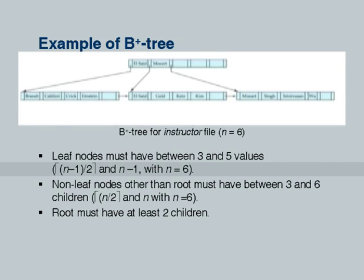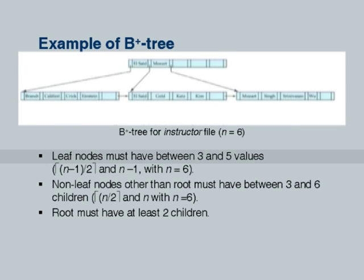Here is an example with n equal to 6. With n equal to 6, each leaf node must have between 3 and 5 values, and every internal node must have between 3 and 6 children - ceiling(6/2) is 3. Notice that with wider nodes, the tree actually got shorter: from 3 levels down to 2 levels for the same data. The wider a node is, the shorter the tree. The number of children of a node is called the fan out. In reality, nodes correspond to disk pages of 16 kilobytes, so fan out is typically around 100.